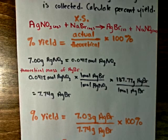And of course the percent yield will be the actual mass given to us in the question, which was 7.3 grams of silver bromide divided by the theoretical mass of silver bromide, which we calculated.